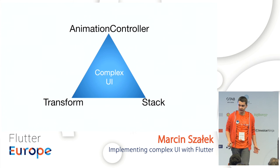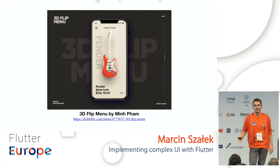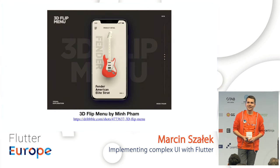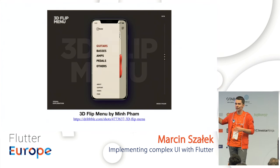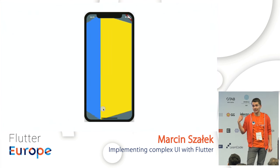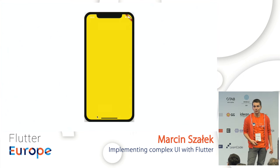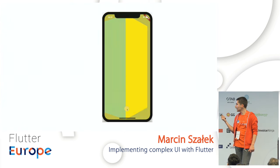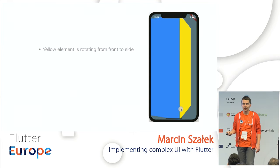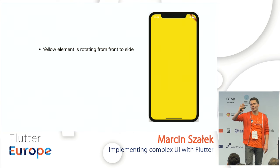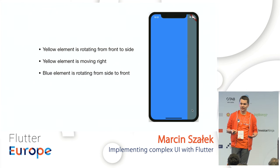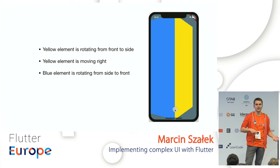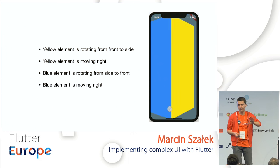We can take it to the next level. This is a design called '3D Flip Mini' by Min Pham, which takes a different approach to the drawer with a cool 3D effect. Ignoring the guitar, focusing on the drawer: breaking it down, the yellow element rotates from being front-facing to sideways and moves right, while the blue element rotates from sideways to front-facing, moving from off-screen onto the screen.